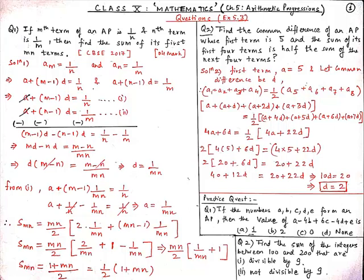Our second question for today is: find the common difference of an AP whose first term is 5 and the sum of its first 4 terms is half the sum of its next 4 terms. According to our question, the first term is 5. Let the common difference be d. The sum of the first 4 terms, a1 + a2 + a3 + a4, equals half the sum of the next 4 terms.